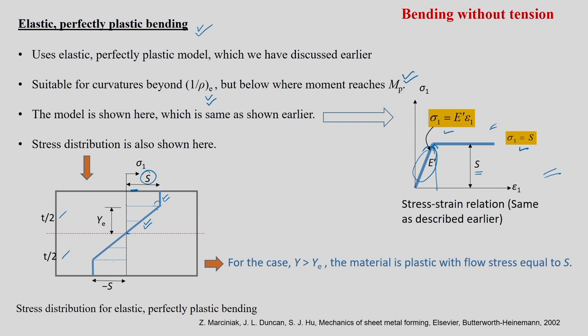The transition point is called ye — the distance from the mid-surface marking the limit of the elastic region. For y greater than ye, the material is plastic with flow stress equal to S. This stress distribution is similar to the strain hardening case except here the variation is linear rather than non-linear.